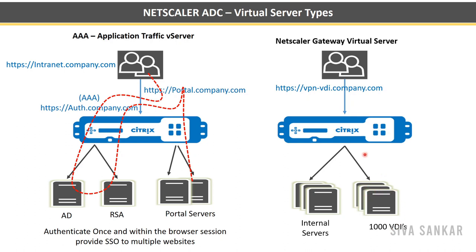The difference between gateway and a normal virtual server is that a normal virtual server load balances one or two servers, whereas in a gateway virtual server — for example with VDI — you could have a thousand VDIs. When accessing Horizon or ZenDesktop, the actual VDI IP is given to NetScaler, translated to a token, and sent to the user. Gateway is generally for accessing a pool of services in the back end in a secure way — same with VPN and internal servers.